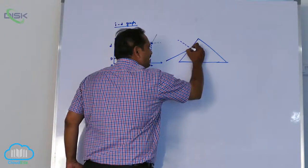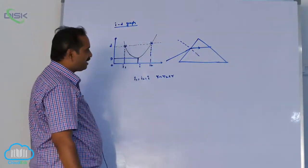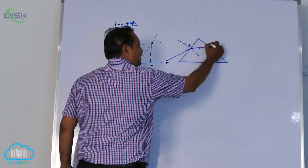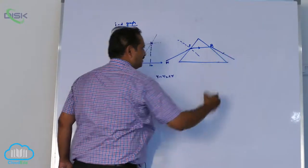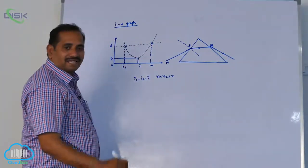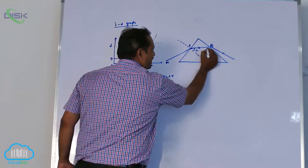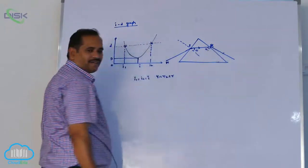At minimum deviation, refracted rays, that means according to your previous diagram, mpq and this pq is refracted ray must be parallel to the base of the prism. Why? Because r1 equal to r2, i1 equal to i2.